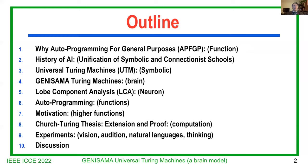The outlines. First, I will talk about why we need Autoprogramming for General Purposes — APFGP. It's about the functions of the brain model and also a model for machine learning on silicon. And I will review the history of AI, and in particular, it will unify the two major schools in AI: